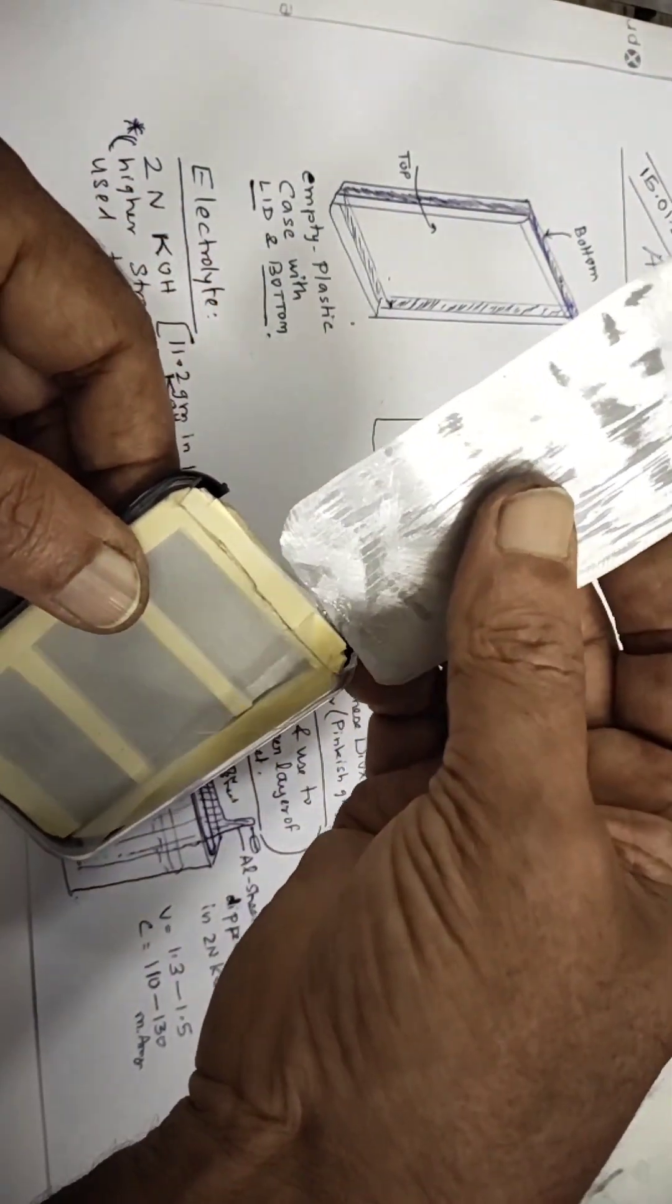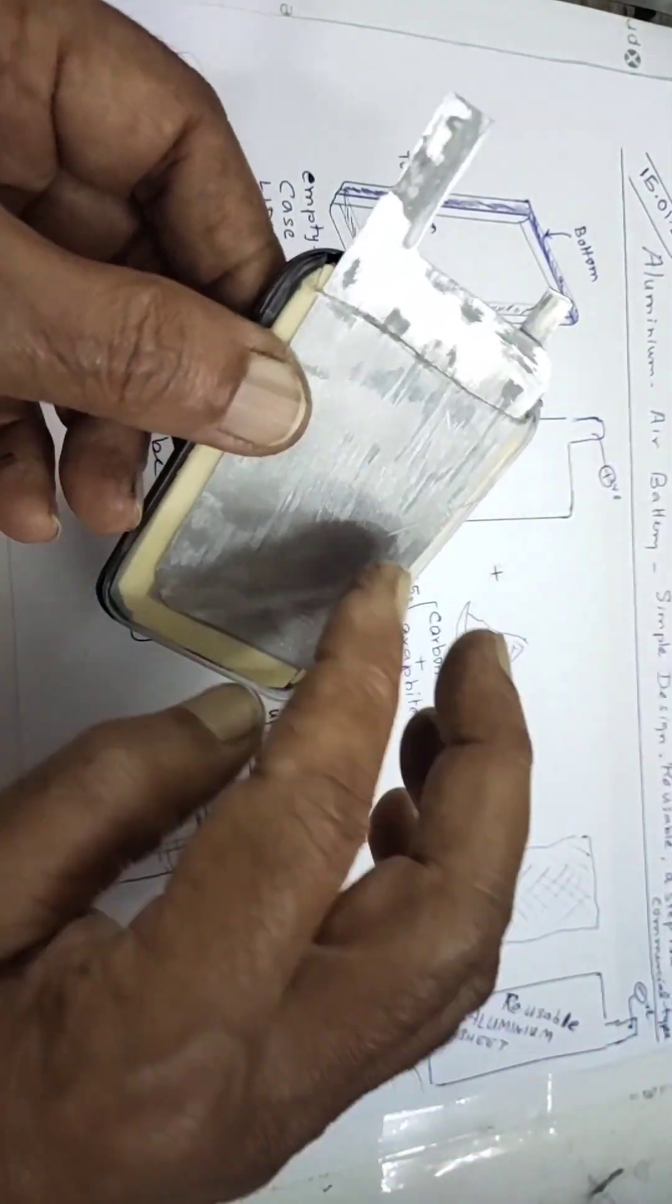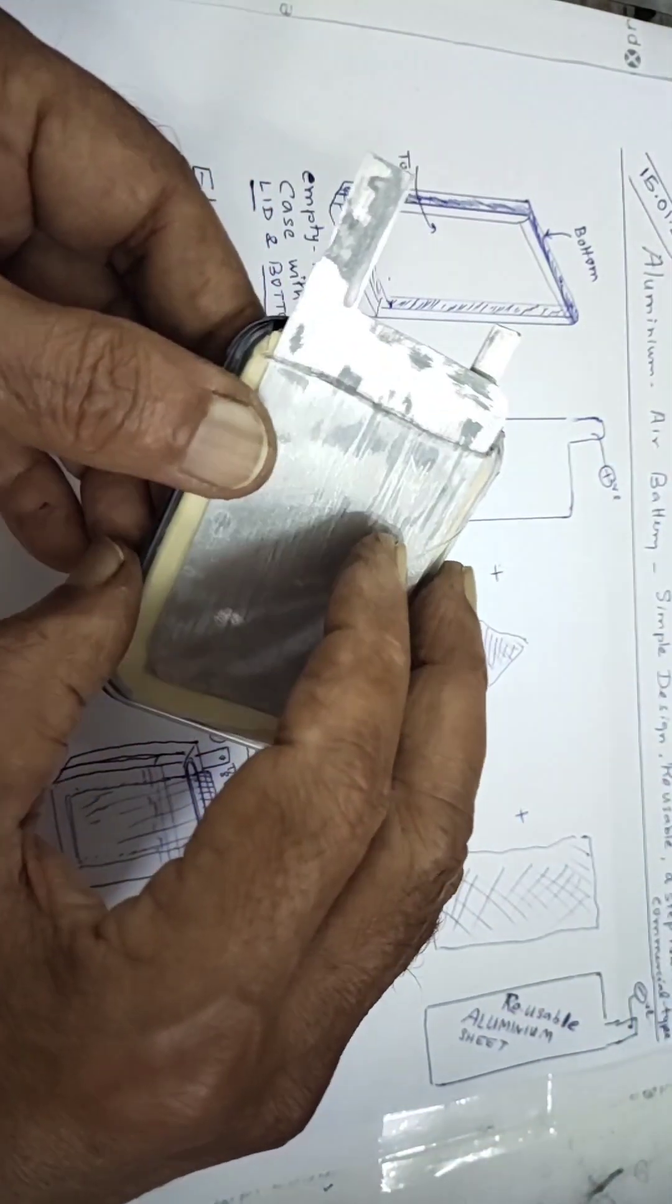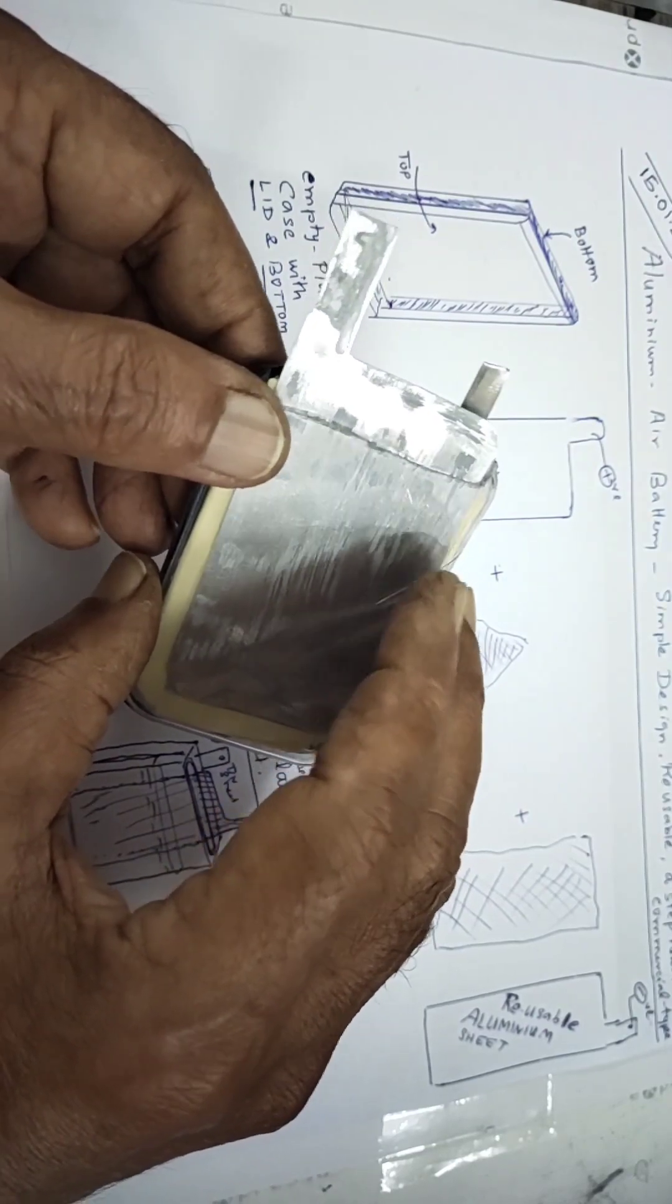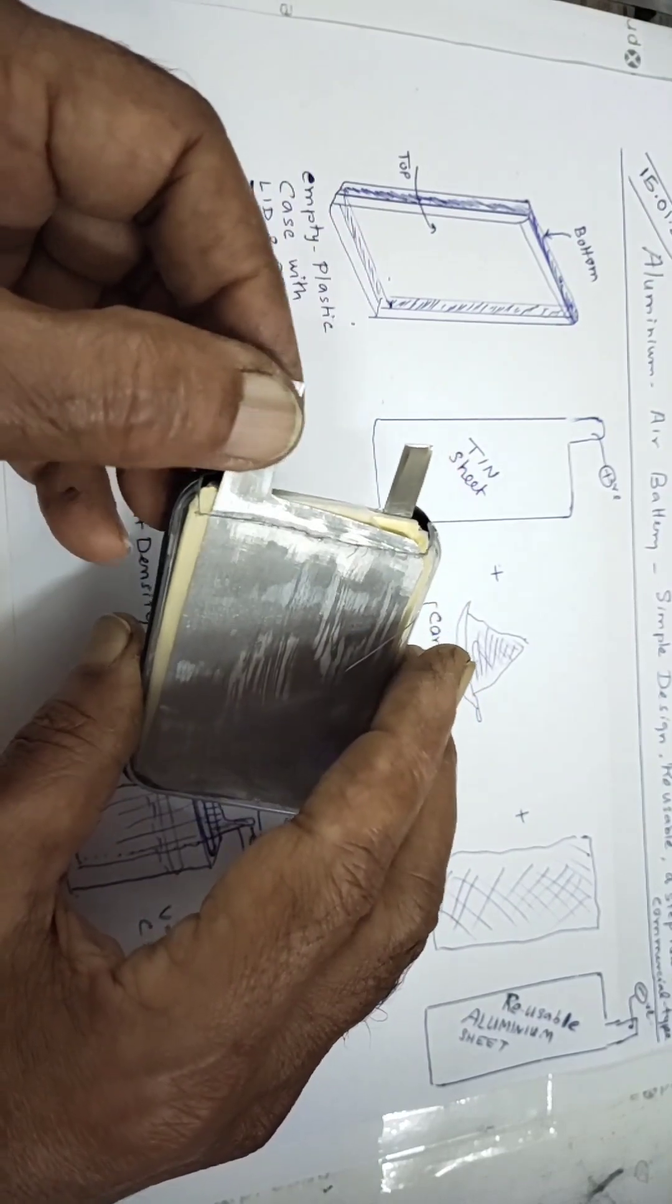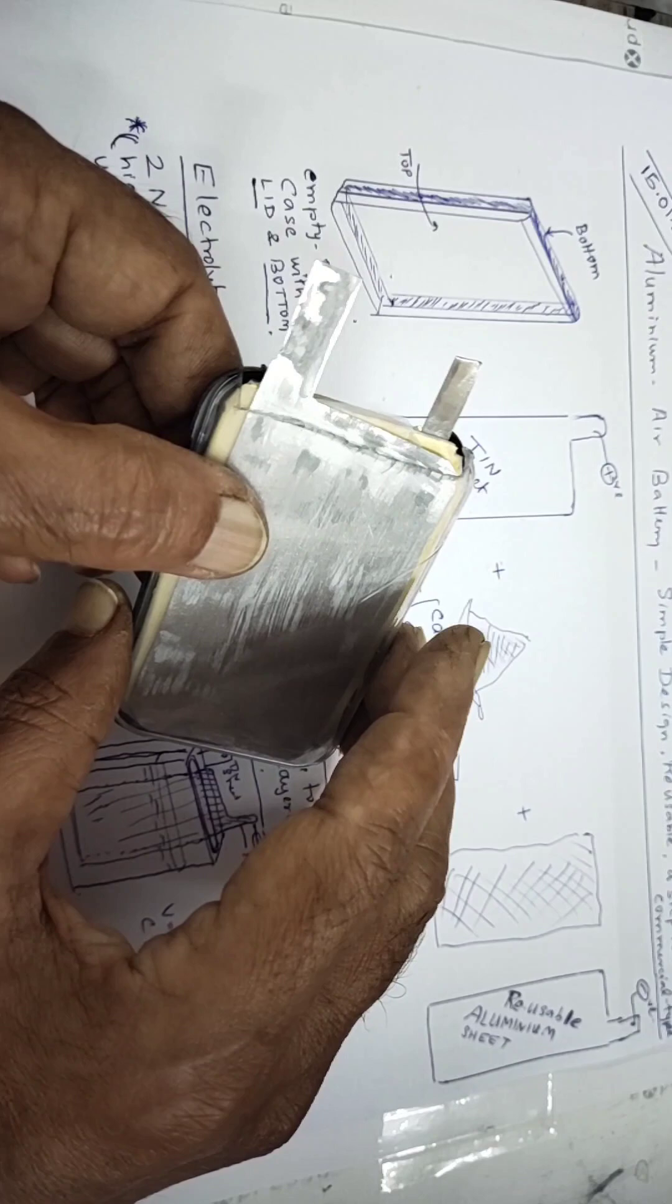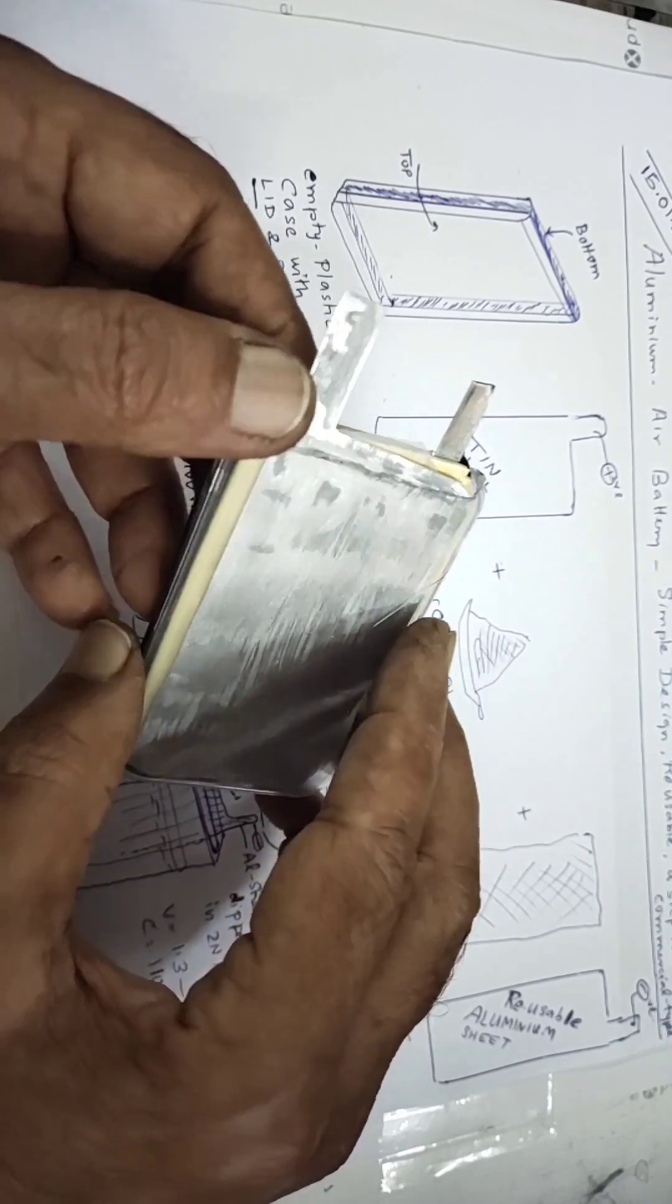This becomes a cell. When required you can insert the aluminum sheet. When the alkali electrolyte is here, 2N potassium hydroxide will be the electrolyte. Once you dip it you can see current instantly generated. It will be around 1.3 to 1.5 volts. We will see it in practice step by step.